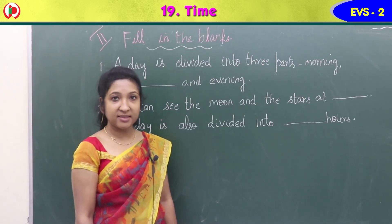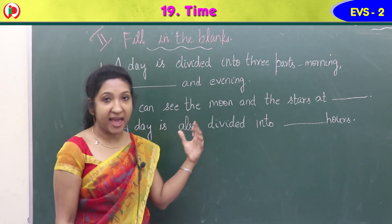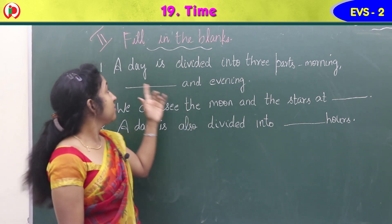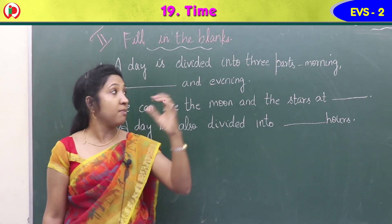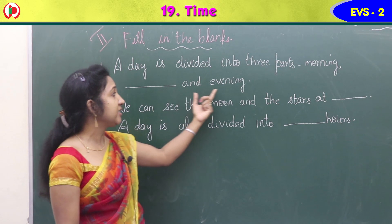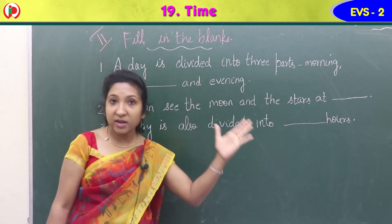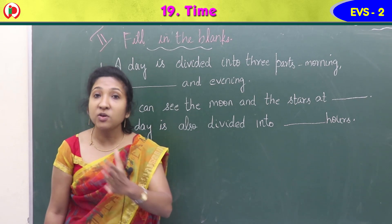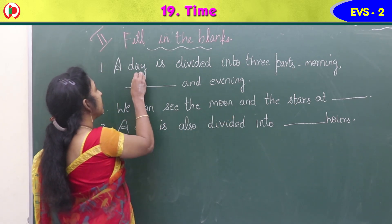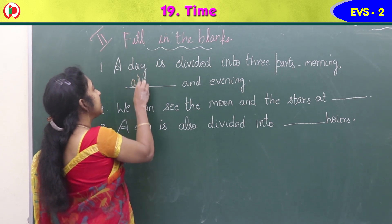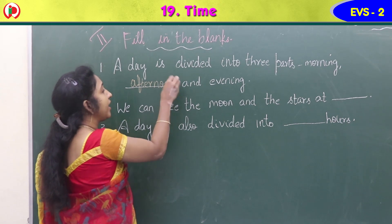The next exercise in the workbook is exercise 2: fill in the blanks. First one: a day is divided into three parts — morning, dash, and evening. A day is divided into three parts: morning, then afternoon, and evening.